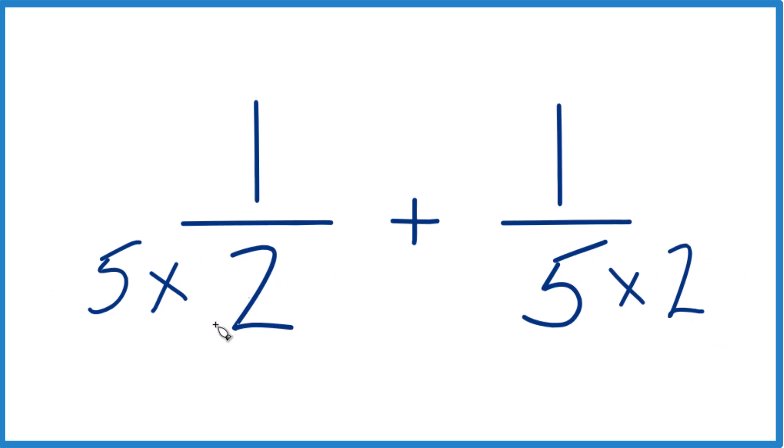But we can't just multiply the denominator by a number, we need to multiply the numerator by that number as well because 5 over 5 that's just 1. We don't change the value, just the representation. Over here by 2.